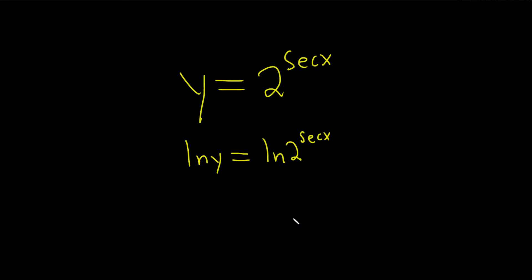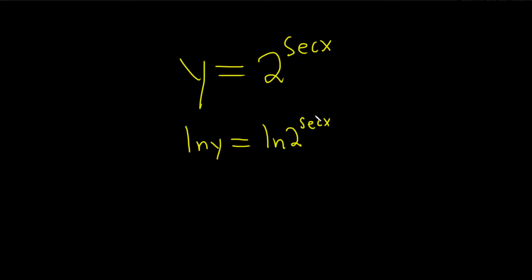The next step is you take the secant and you just bring it down, just put it in the front. That's a property of logs. Whenever you have an exponent, you can just bring it down. So ln of y equals the secant of x times the natural log of 2.